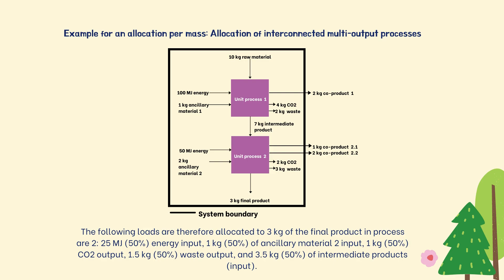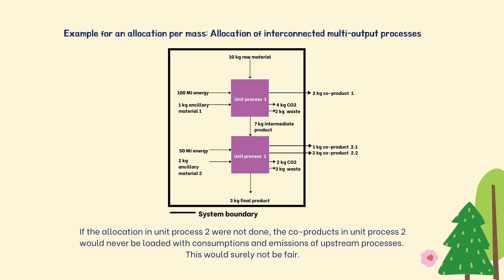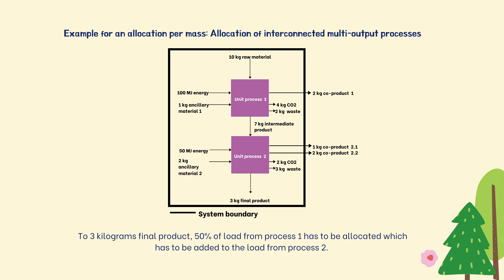The following loads are allocated to 3 kg of the final product in process 2: 25 megajoule energy, 1 kg of ancillary material 2, 1 kg carbon dioxide, 1.5 kg waste, and 3.5 kg of intermediate products. Only the loads of process 1 related to the 3.5 kg intermediate product input into unit process 2 can be allocated to the final product. If allocation in unit process 2 were not done, the co-products would never be loaded with consumptions and emissions of upstream processes, which would not be fair.